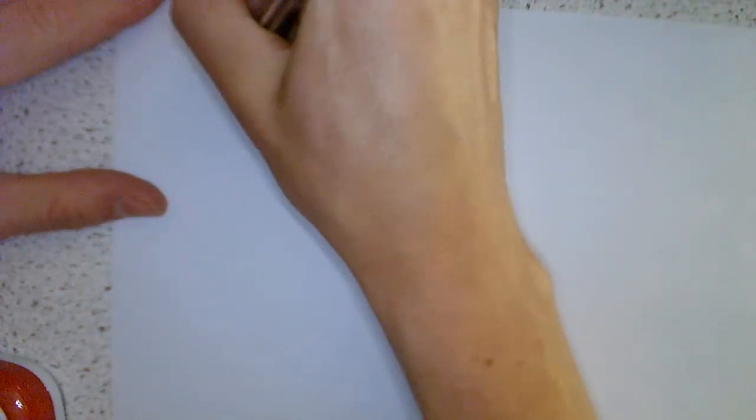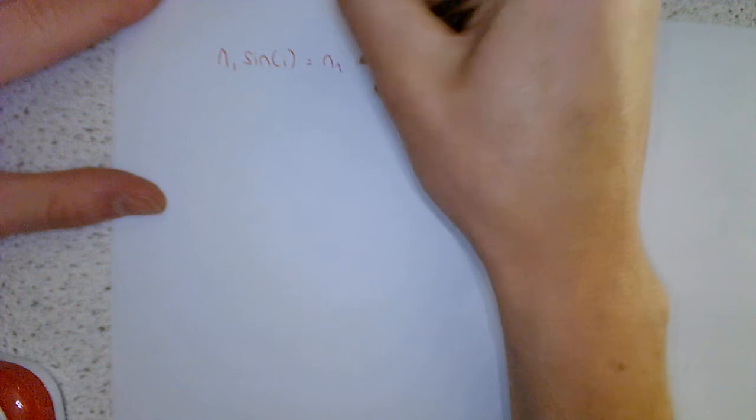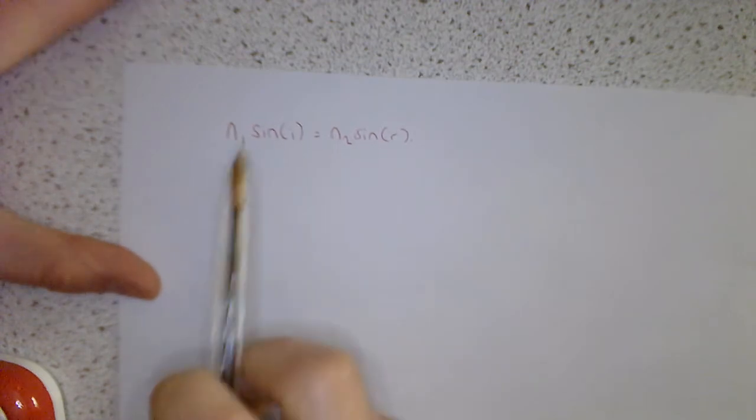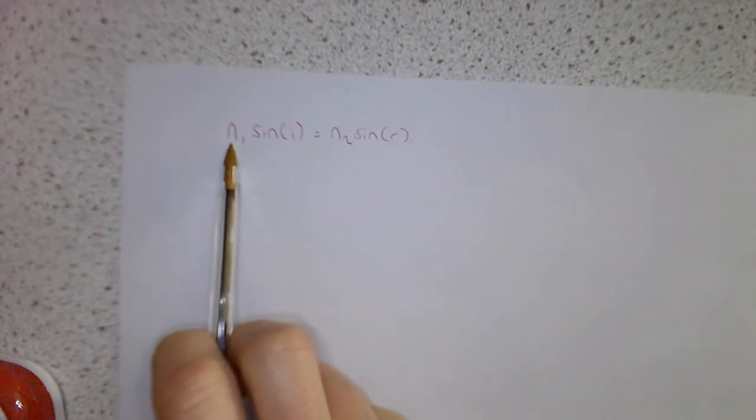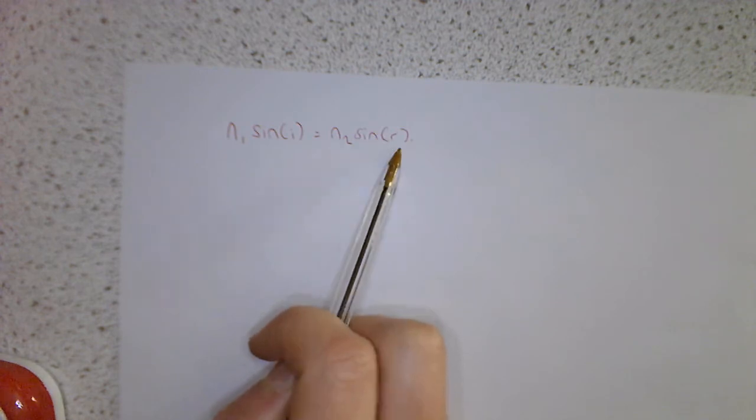So Snell's law is this one here. So in terms of defining the terms on here. So N1 is the refractive index before the boundary. I is the angle of incidence. N2 is the refractive index after the boundary. And R is the angle of refraction.